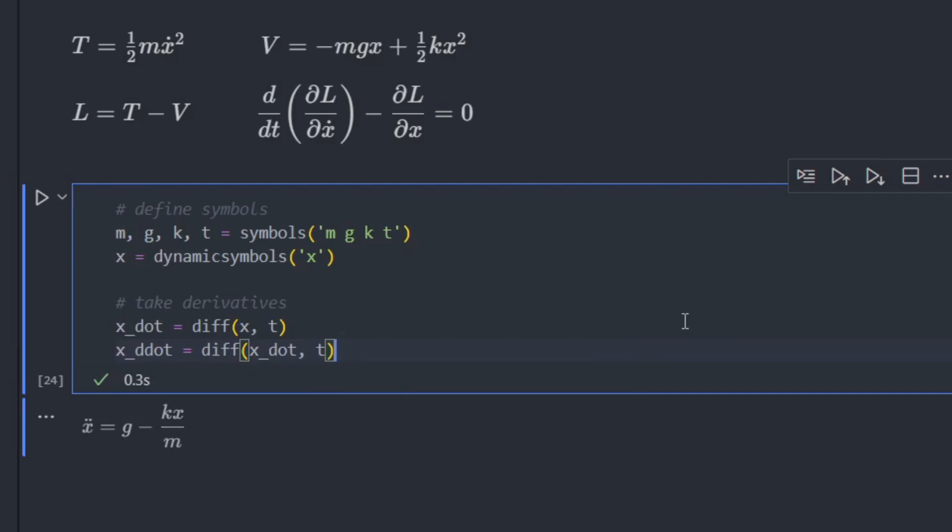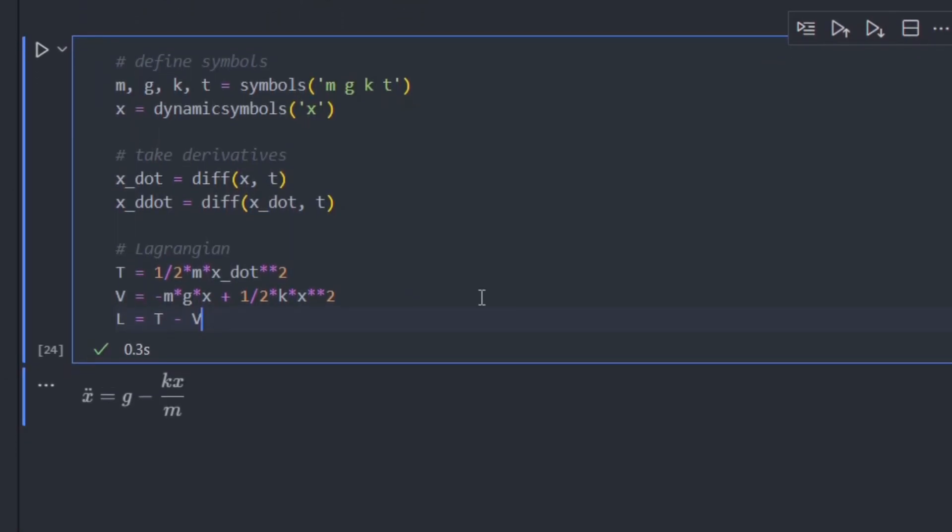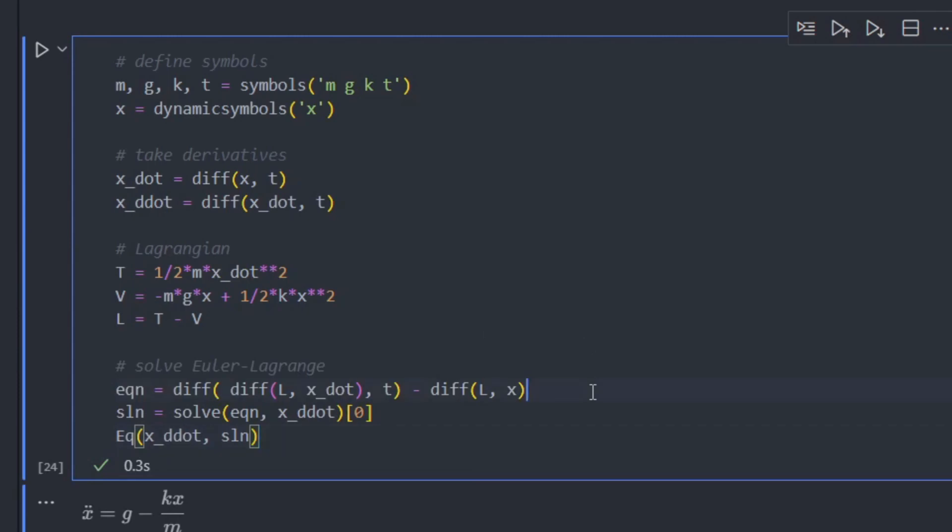Let's define x dot and x double dot. Now we can plug into T, V and L to get our Lagrangian. Remember that T is our kinetic energy, V is our potential energy. And then finally, we can solve the Euler-Lagrange equation. So here, we'll write down the Euler-Lagrange equation and then use the solve command, pull out the first solution, and then output that to the screen. So running that, we get x double dot is g minus k x over m.